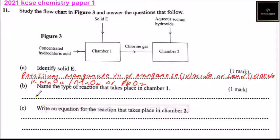But part B, name the type of reaction that takes place in chamber 1. So the kind of reaction is redox or oxidation. This is where some electrons are lost in the reaction.